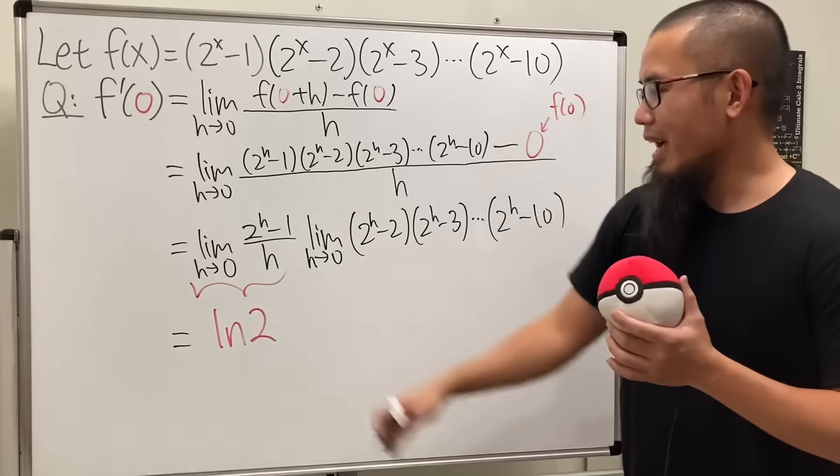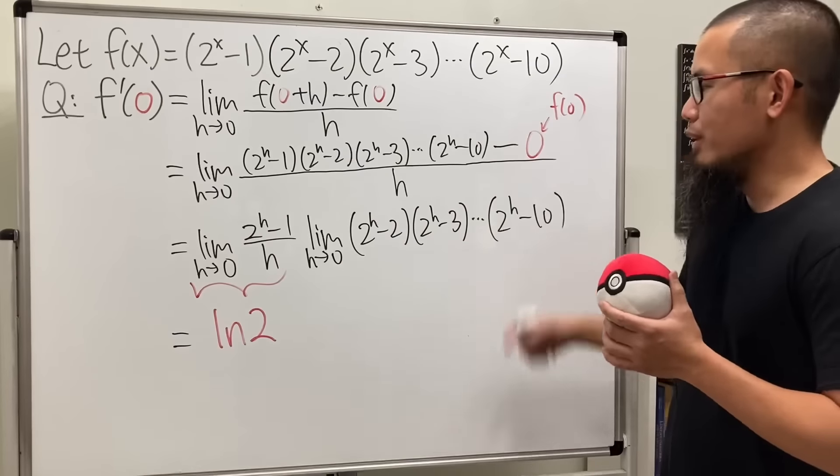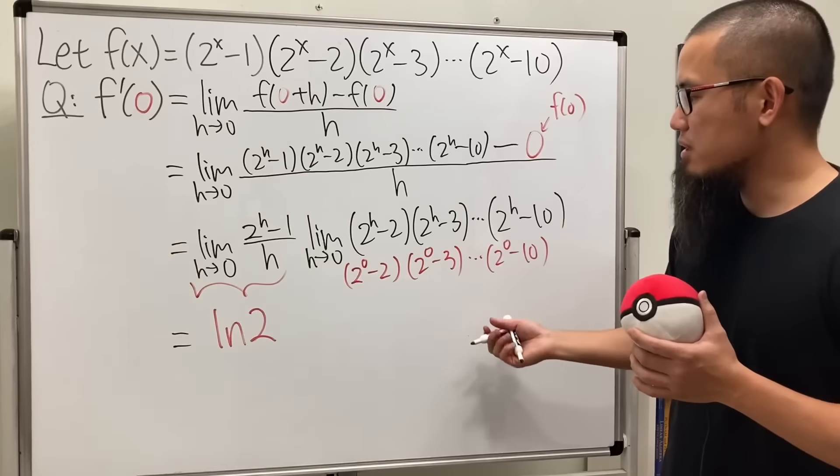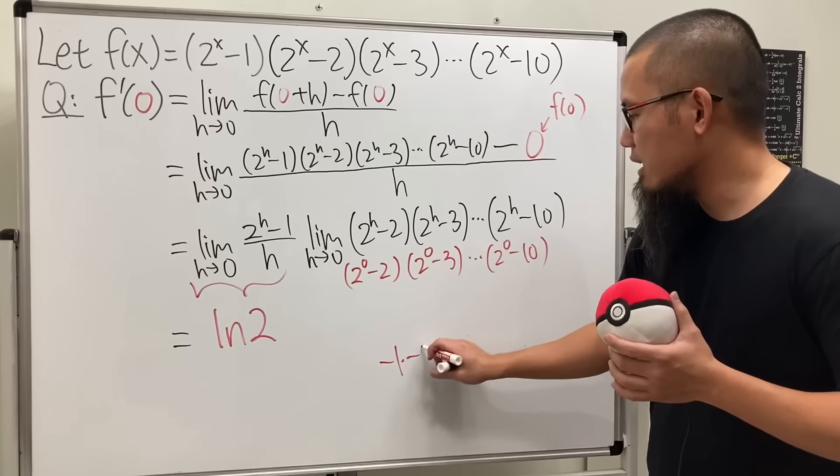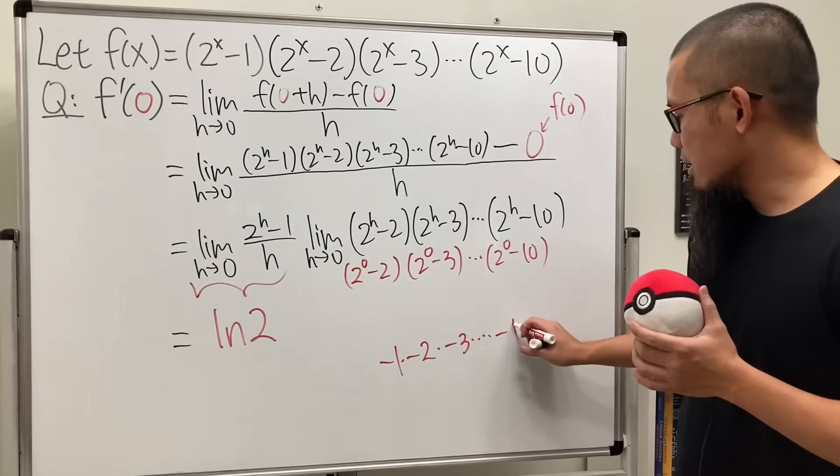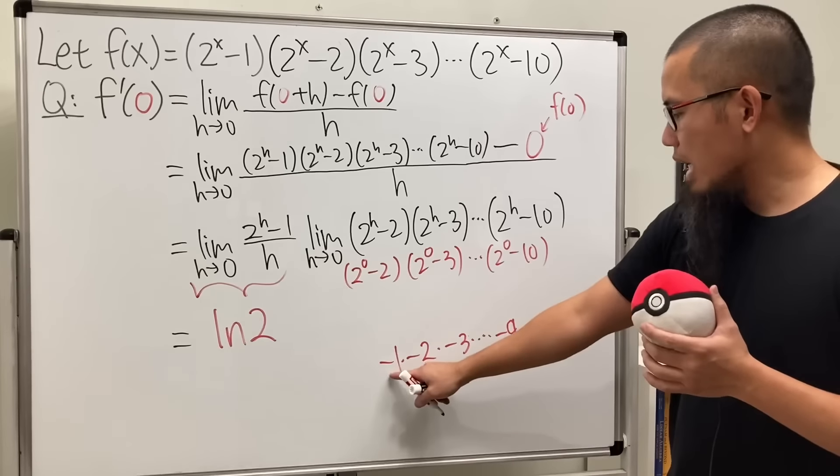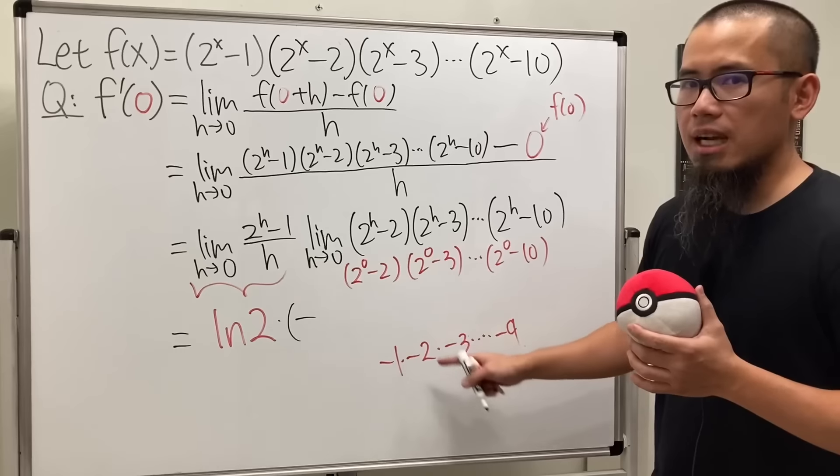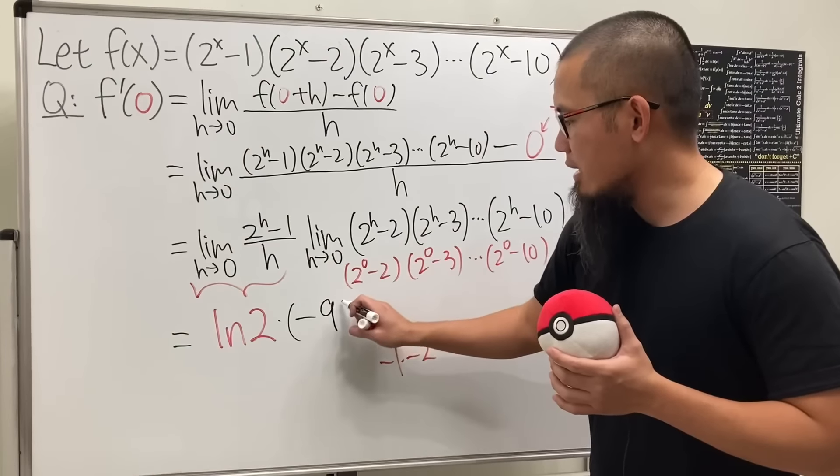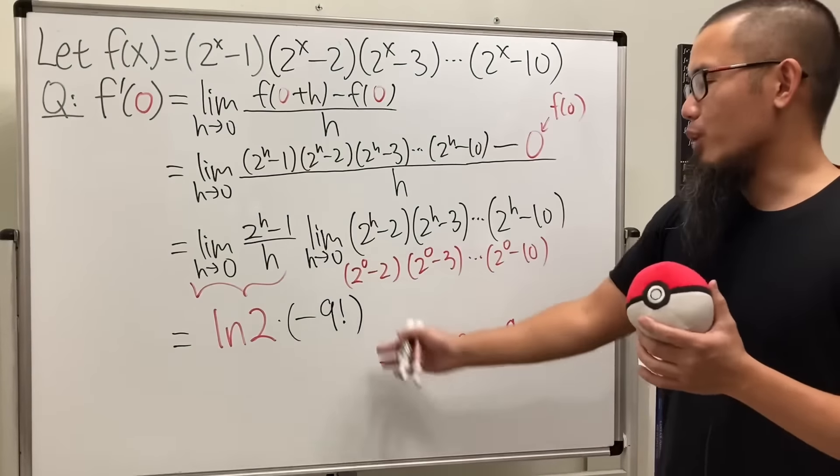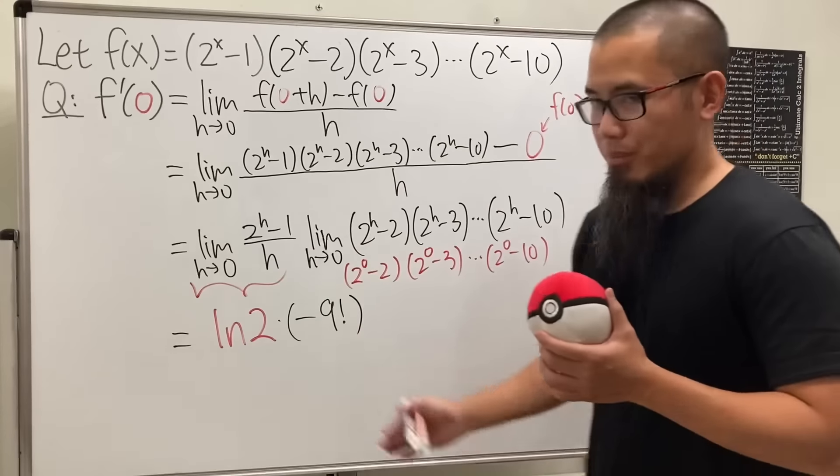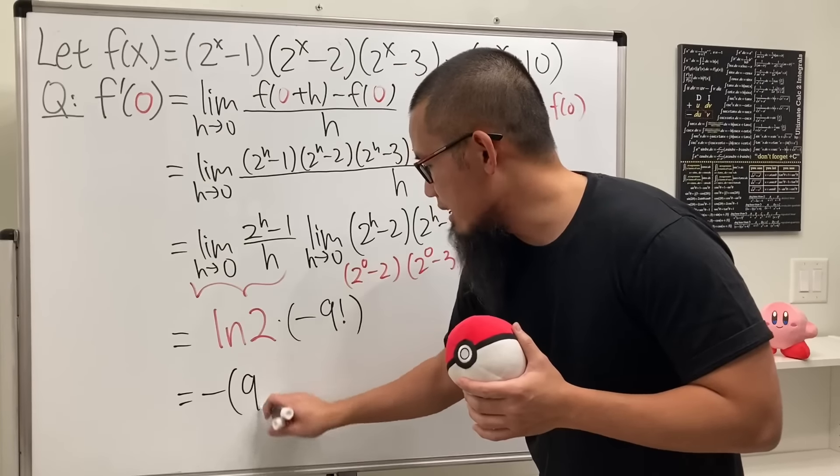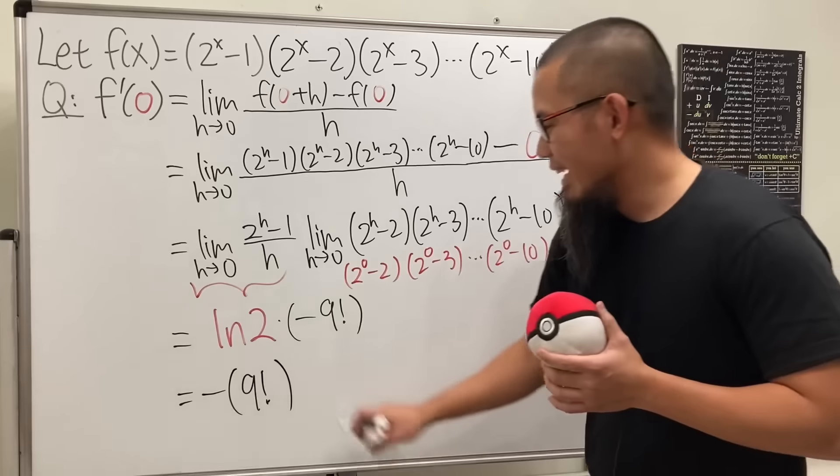That's done. For the rest, what do we do? Just plug in zero into all the h's. So check this out, we have negative one times negative two times negative three up to times negative nine. So we see that we have a total of nine negatives, therefore we will have a negative value. And then of course nine times eight up to one, we can just write it as 9! And if you would like, you can work that out, but I think I'm just going to leave it like that. Ladies and gentlemen, the answer for this is negative 9! times ln(2).